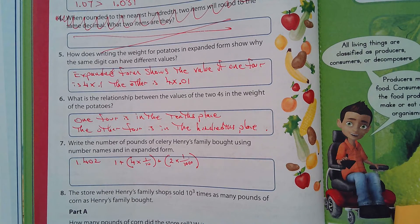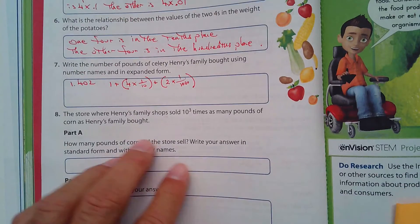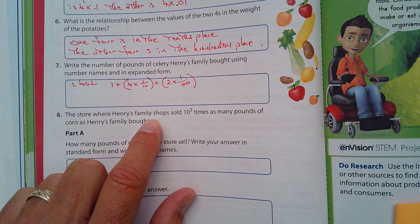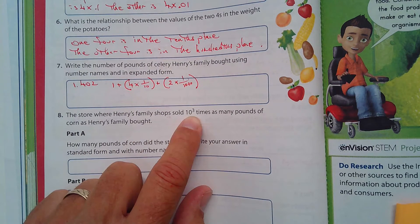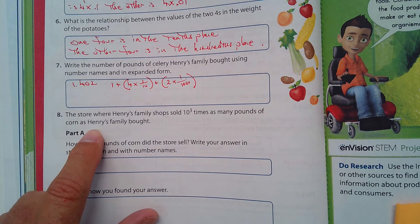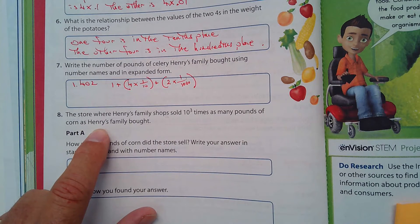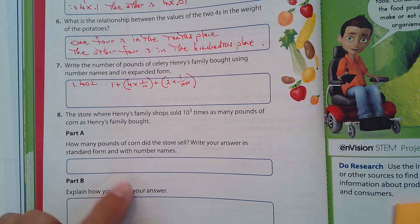All right, almost done here. Number 8, the store where Henry's family shops sold 10 to the third times as many pounds of corn as Henry's family bought.